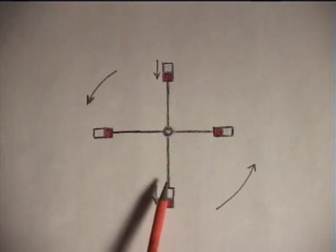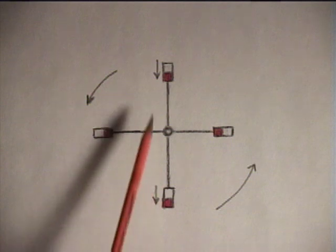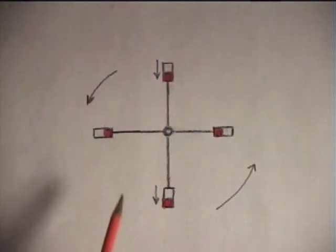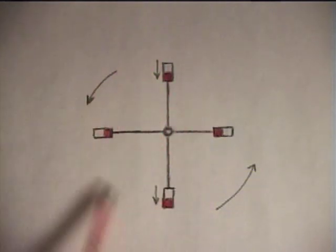But it takes 10 foot-pounds of energy to lift this up and 10 foot-pounds of energy to lift this back up to repeat the process. So you have no net energy at all. It takes more energy input to get this to rotate than you get out of it rotating.